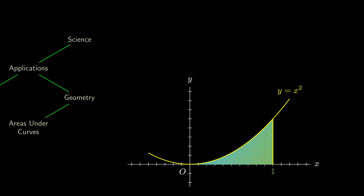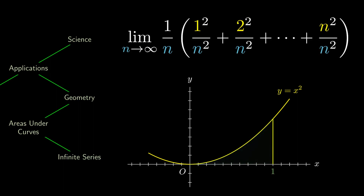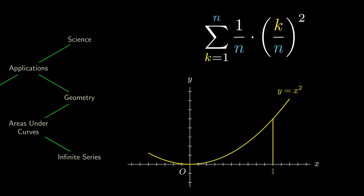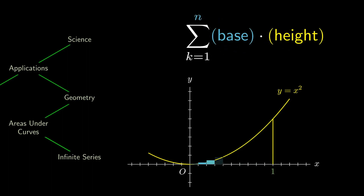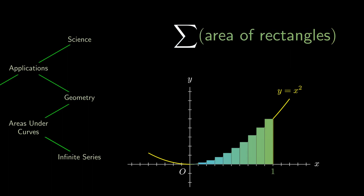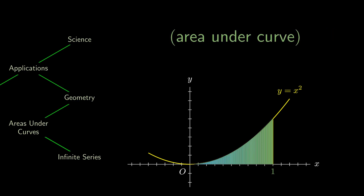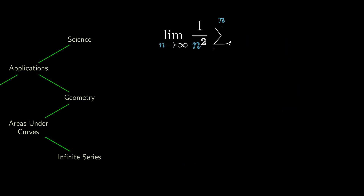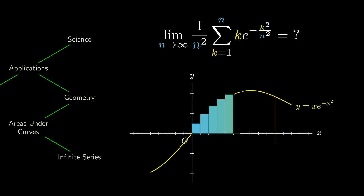We can even use this idea to calculate several infinite series. Before taking n to infinity, we can rewrite this expression as 1 over n times a sum. This can be rewritten as a sum of base times height, where the base refers to the base of one rectangle and the height refers to the height of that corresponding rectangle. In other words, the quantity we were interested in is a sum of areas of rectangles. But as we increase the number of rectangles, the sum of their areas approaches the area under the curve. We know how to find the area under the curve of y equals to x squared — it's the integral from 0 to 1, which equals 1 over 3. Using this idea, can you find the limit of this particular sum? You might find this diagram and these rectangles helpful.